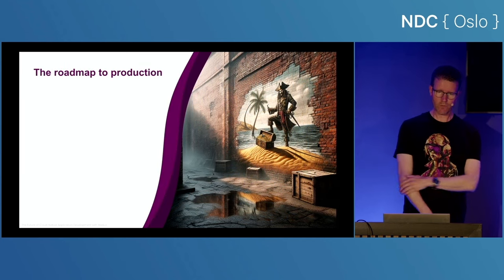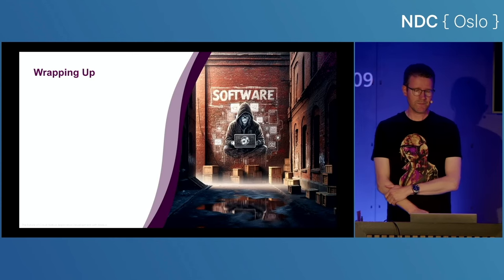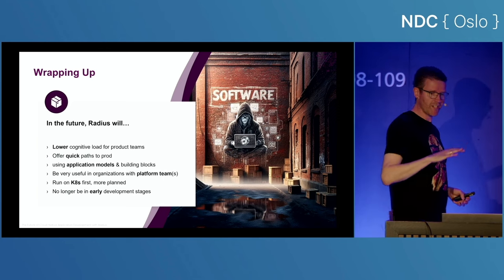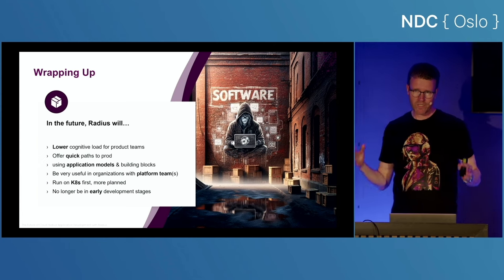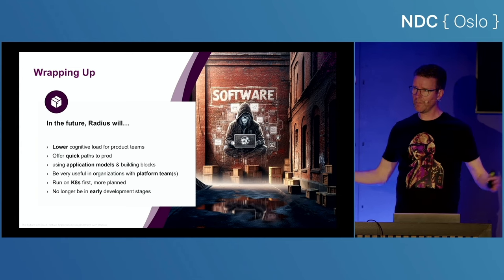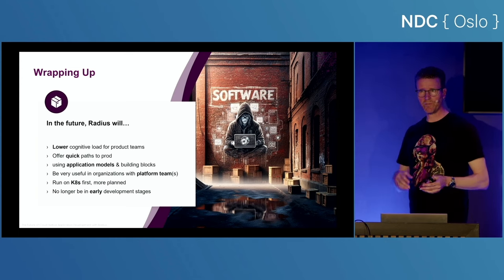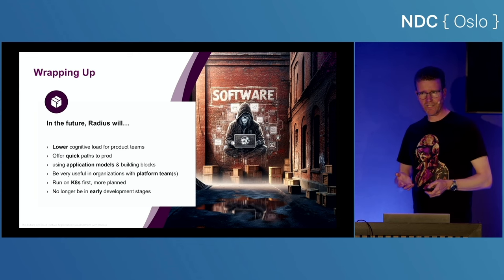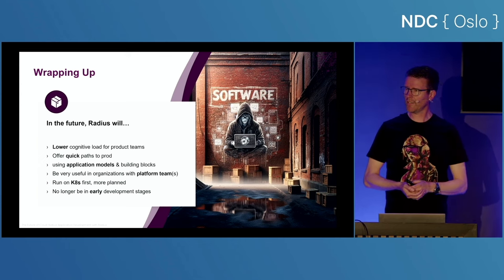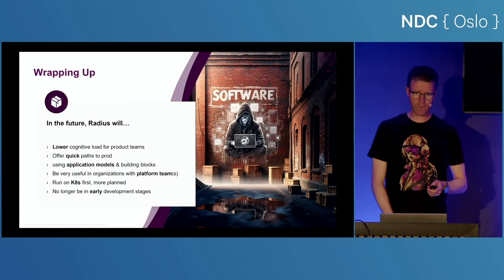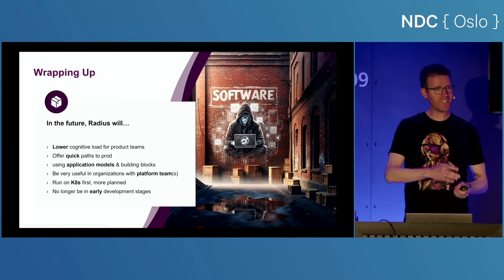We can finally check off everything from our roadmap — we are ready to go into production. Please don't. To wrap up: in the future, Radius will help you lower cognitive load for product teams. It will offer quick paths into production for every team using application models — so instead of talking about resources or source code, you can talk about the application definition together. I think it will be very useful in larger organizations with platform teams defining best practices and development teams quickly getting up and running. It will run on Kubernetes, and in the future they are looking at multiple platforms. Hopefully you will see less bugs and fewer failing demos as it's continuously being worked on.